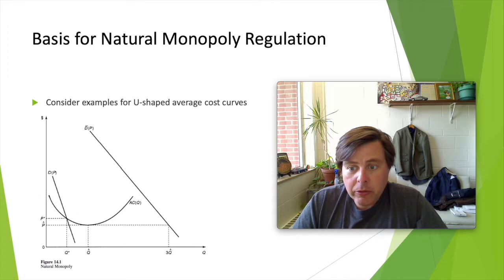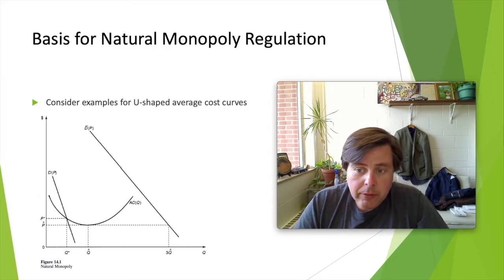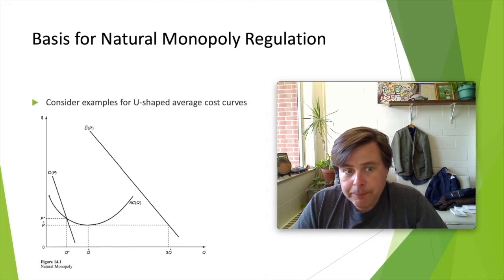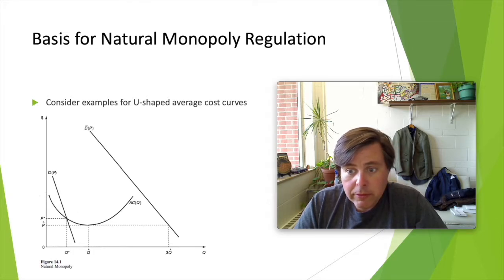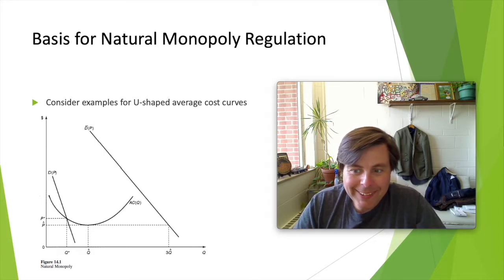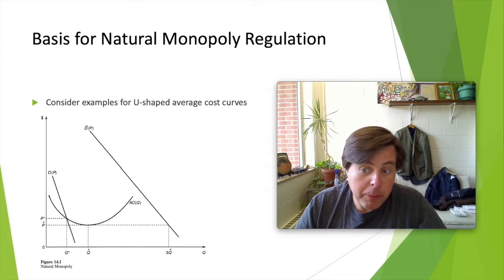Welcome back everybody. This is our series on the basics of economic regulation. This is lecture number seven. In this lecture, we're going to consider the possibility that there's either demand-side or supply-side changes that impact a natural monopoly in such a way that it is no longer a natural monopoly, what our regulatory response might be to that, what some of the pitfalls might be, and how we would mitigate those.